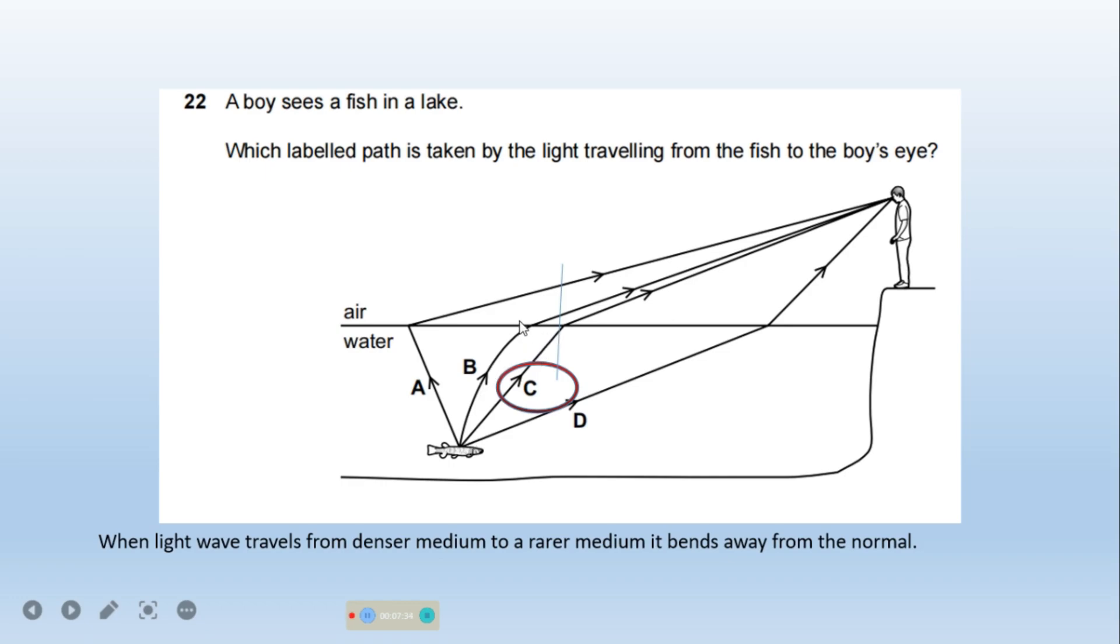For option B, this is a curved path as light travels in a straight line. For option A and C, if we draw normal here as we have drawn in case D, light bends away from the normal for both cases A and C. But C is the right one because there is a path difference between A and C. A takes longer time to reach. So C is the right one.